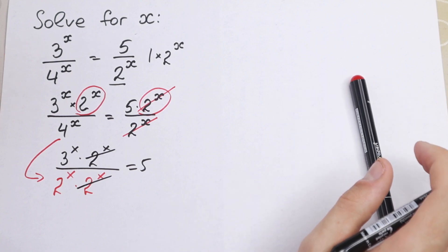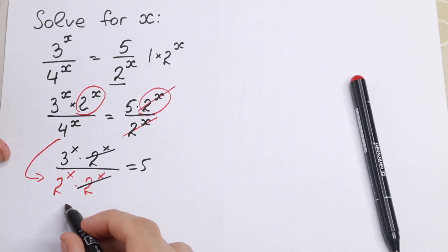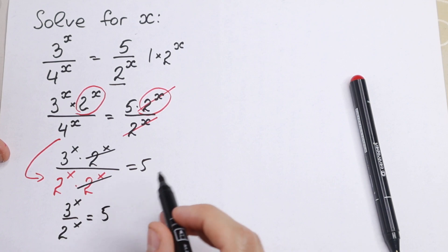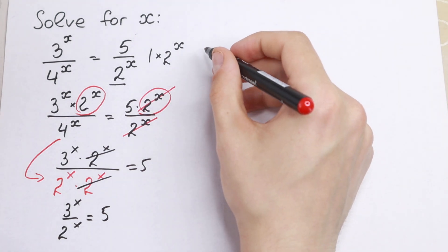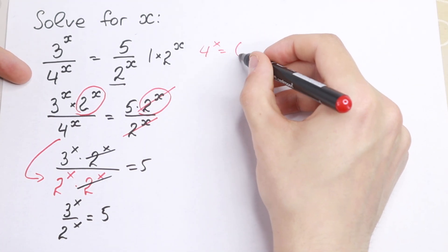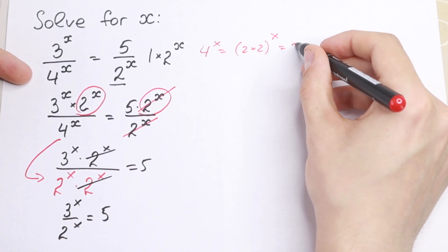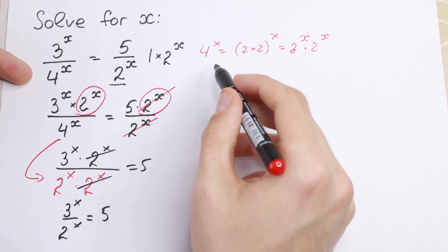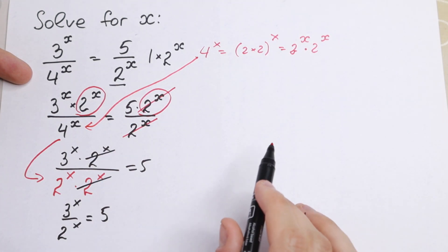So what equation will we have as a result? Nothing hard — we will have 3 to the power x over 2 to the power x, equal to 5. I hope you understand this step, because we can write 4 to the power x as 2 times 2 to the power x, which is equal to 2 to the power x times 2 to the power x. That is the reason why I write it as 2^x times 2^x.